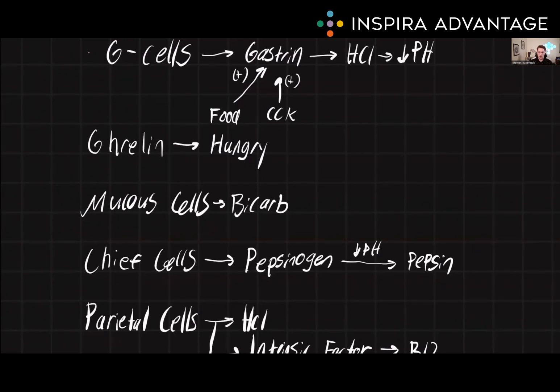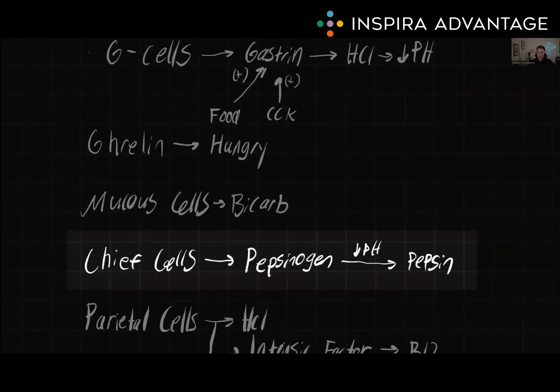Chief cells, also known as peptic cells, are responsible for producing and secreting enzymes that aid in protein digestion. These enzymes include pepsinogen, which is activated by a low pH to form pepsin, which then in turn breaks down proteins into smaller peptides.